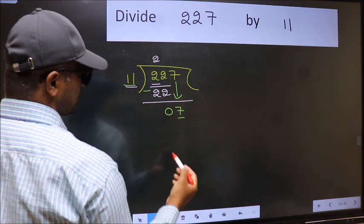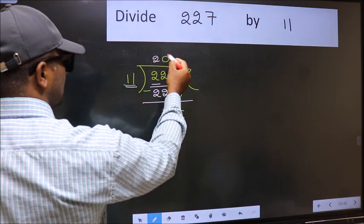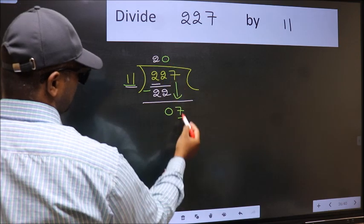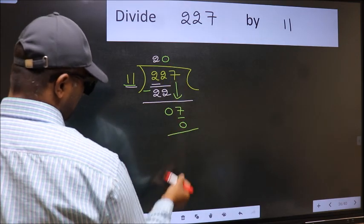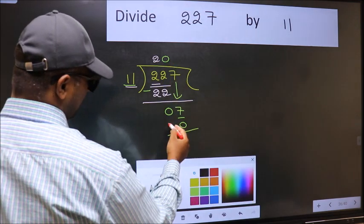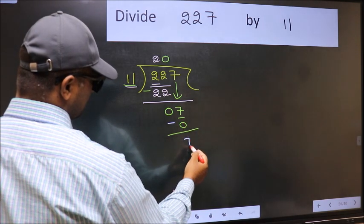So what we should do is, we should take 0. So 11 into 0 is 0. Now you should subtract. 7 minus 0 is 7.